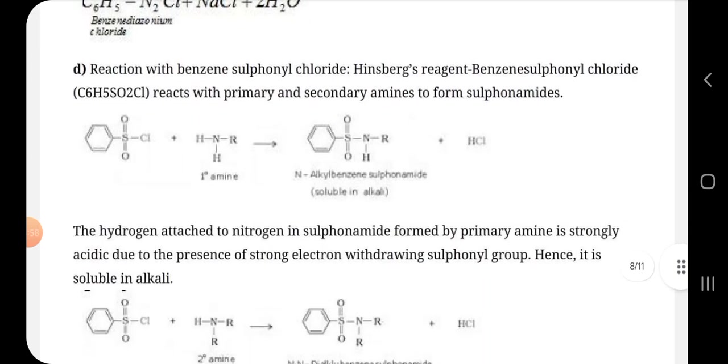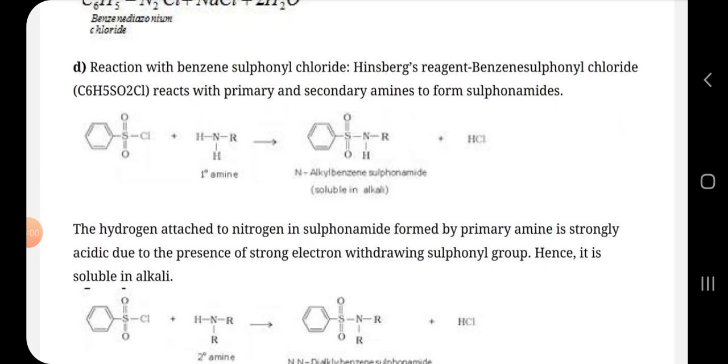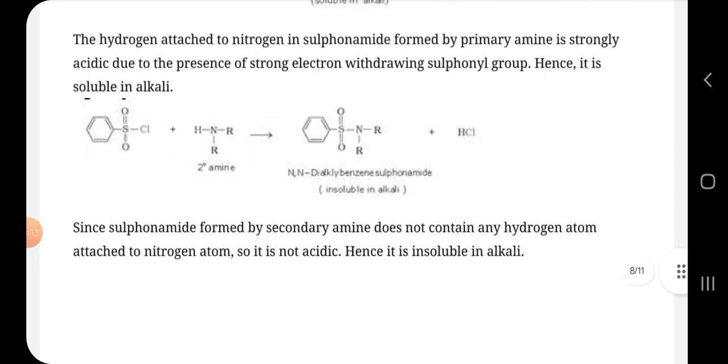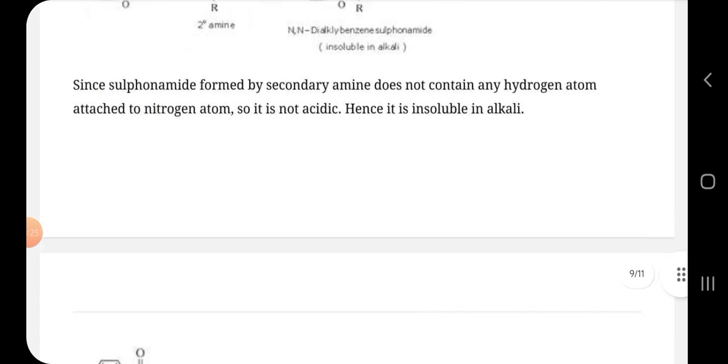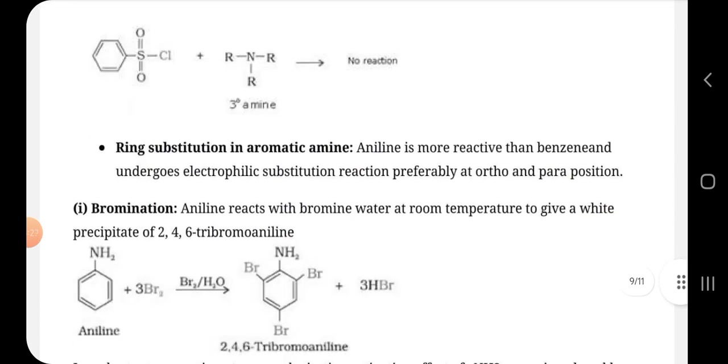Then, reaction with benzene sulfonyl chloride, Hinsberg reagent, that is benzene sulfonyl chloride C6H5SO2Cl reacts with primary and secondary amines to form sulfonamides. In this, the hydrogen attached to nitrogen in sulfonamide formed by primary amine is strongly acidic due to the presence of strong electron withdrawing sulfonyl group. Hence, it is soluble in alkali.